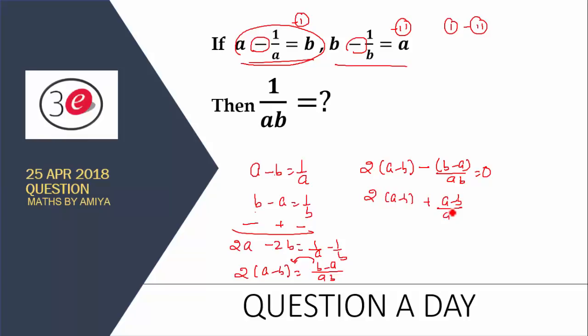So we have 2 times (a minus b) and this one is plus (a minus b) upon ab equals 0. So I am taking (a minus b) out. We have 2 plus 1/ab equals 0. So we can say a minus b is 0, or 2 plus 1/ab equals 0.